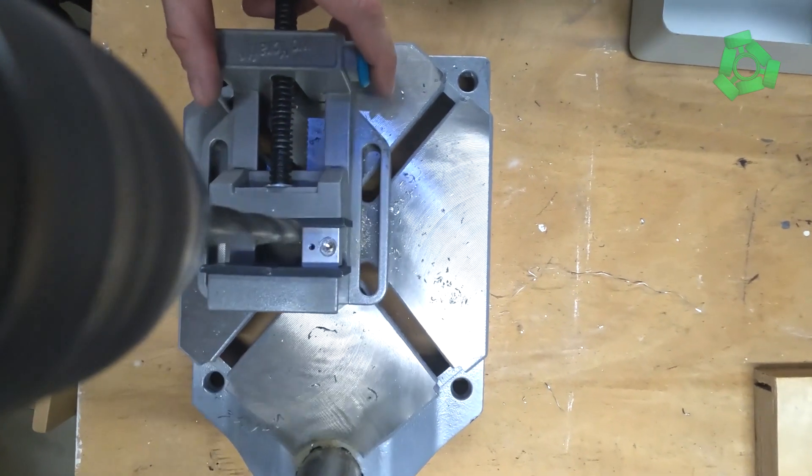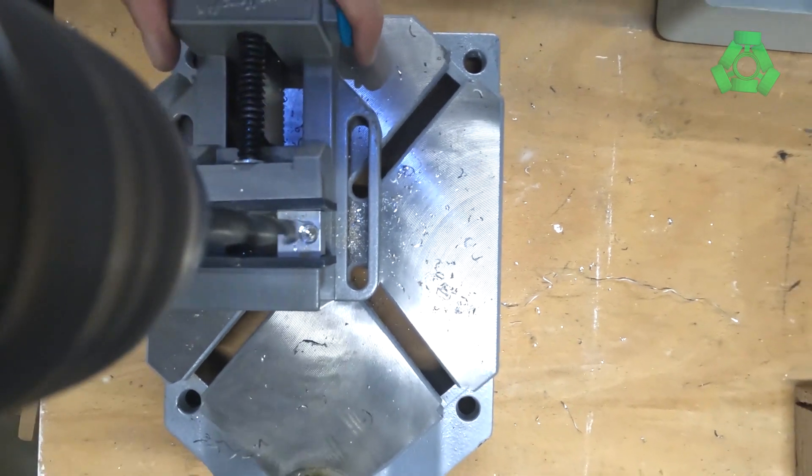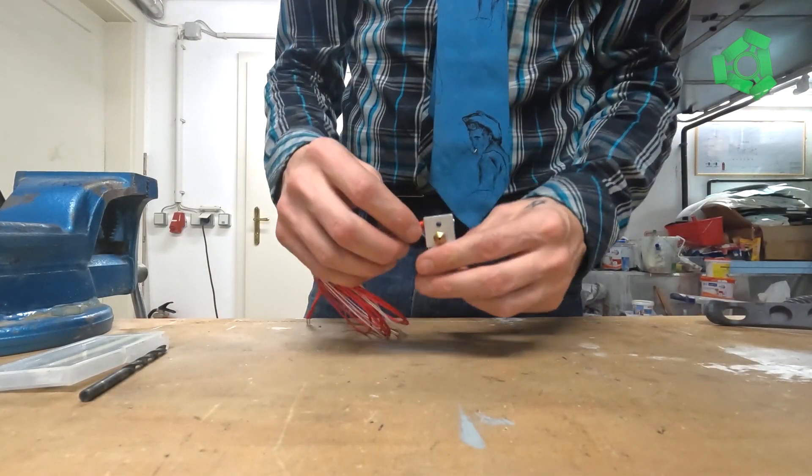Grind a cone-shaped cavity into the heating block while still leaving threads so that the filament nozzle can attach to it, and then fit the sensor and heating resistor into the block.